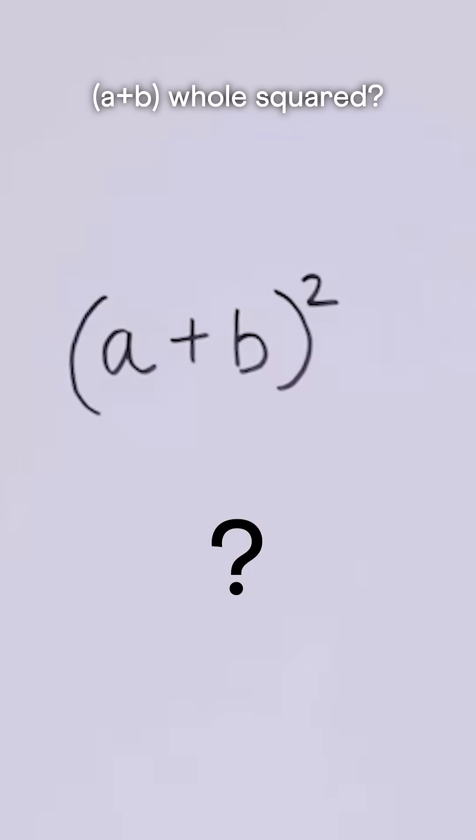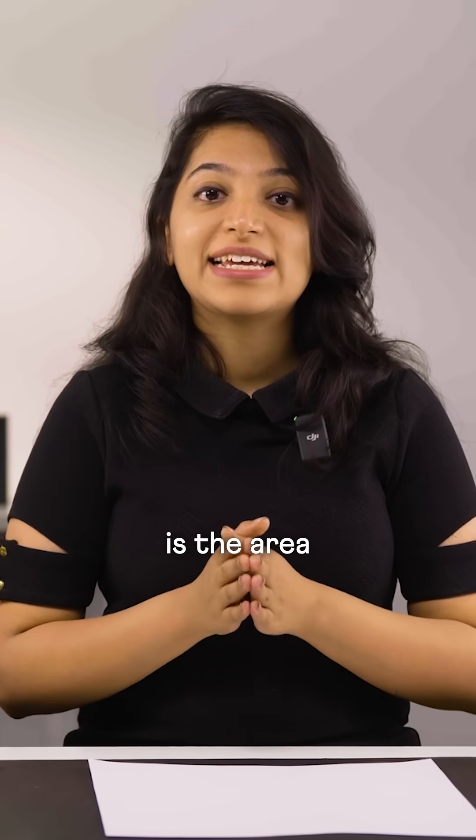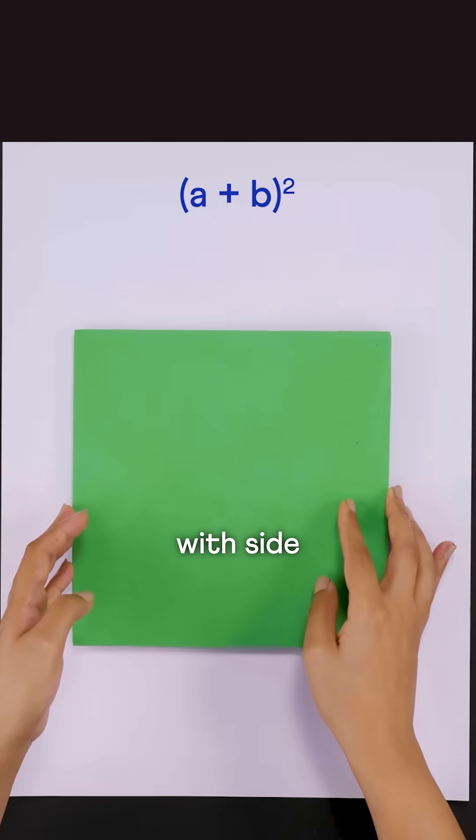What is A plus B whole squared? A plus B whole squared is the area of a square with side A plus B.